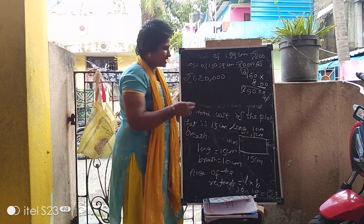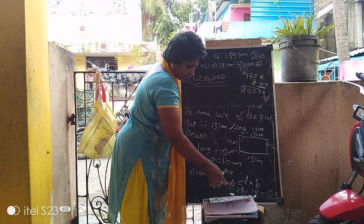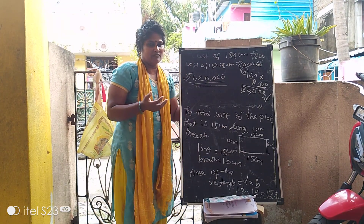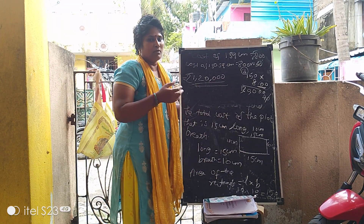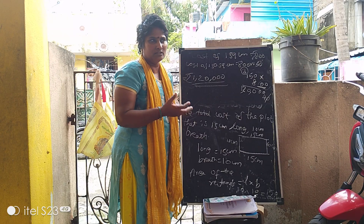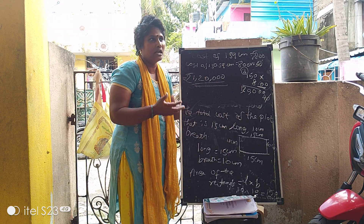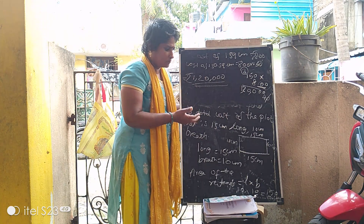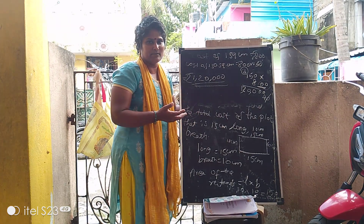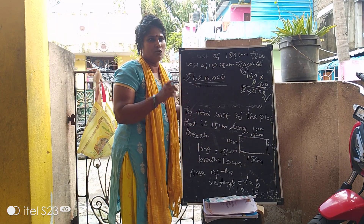So it is very simple. First, find out the area of the rectangle. Then multiply the area of the rectangle with the cost of 1 square centimeter. Cost of 1 square centimeter is Rs. 800, so 150 square centimeters into 800.